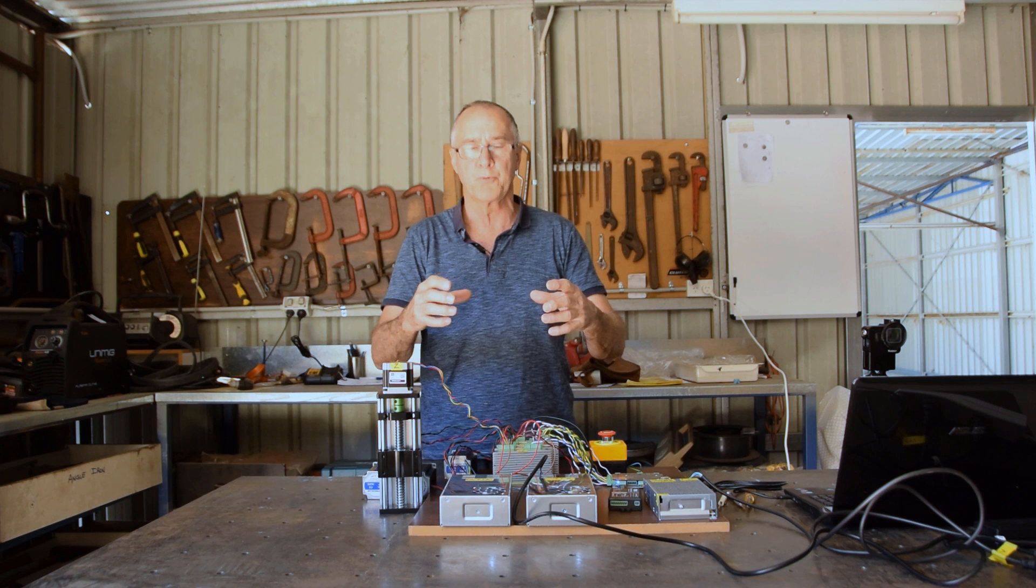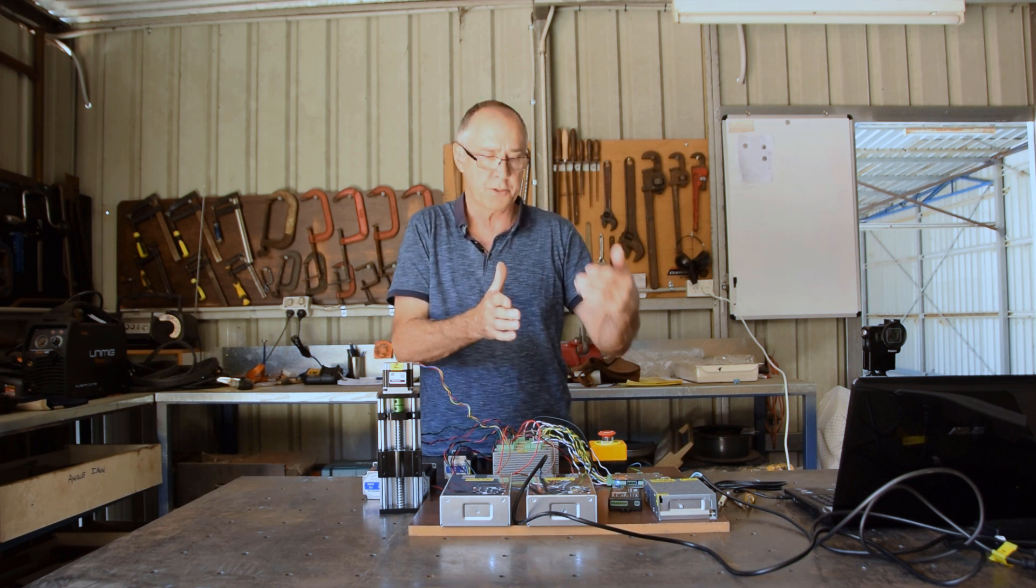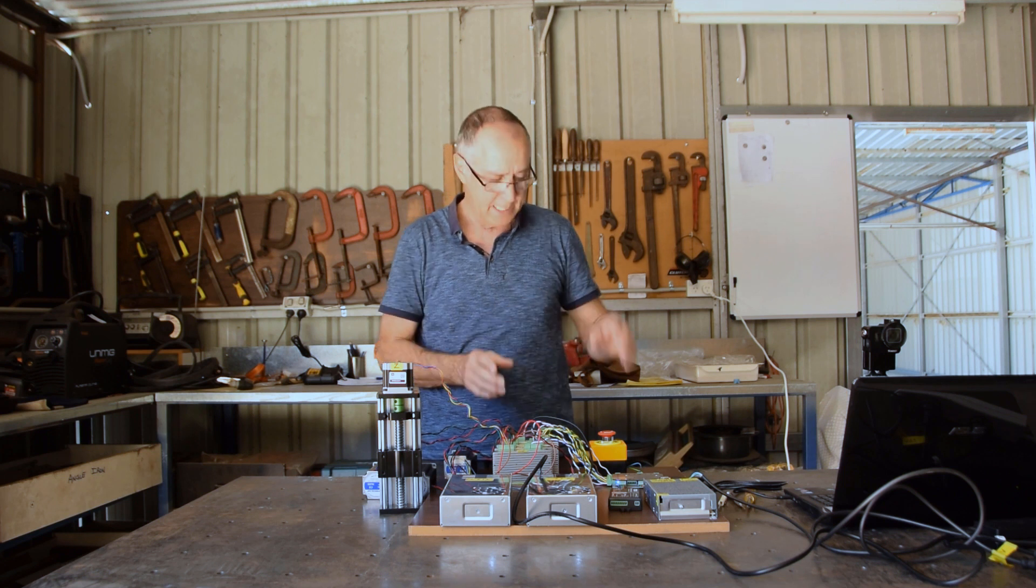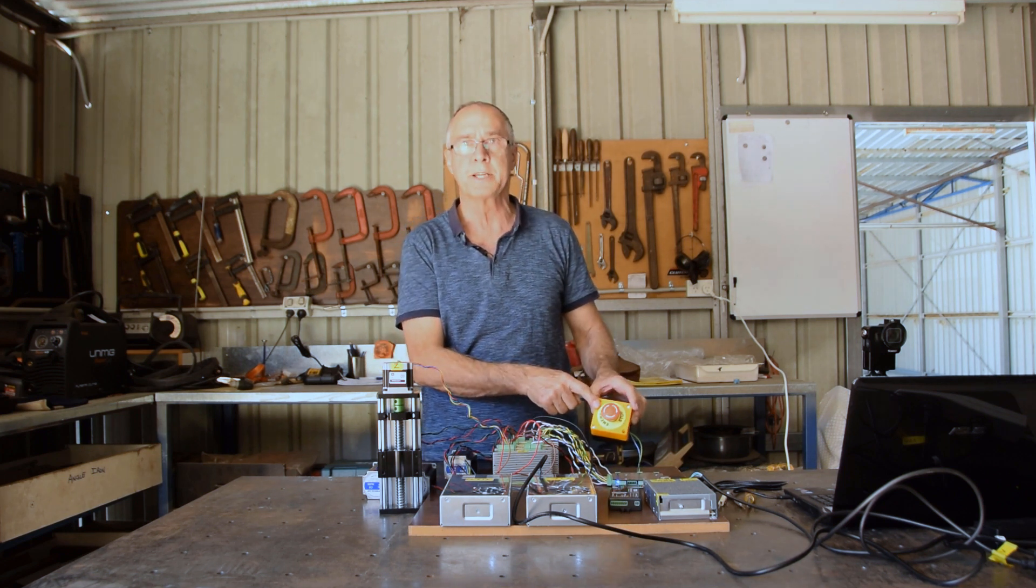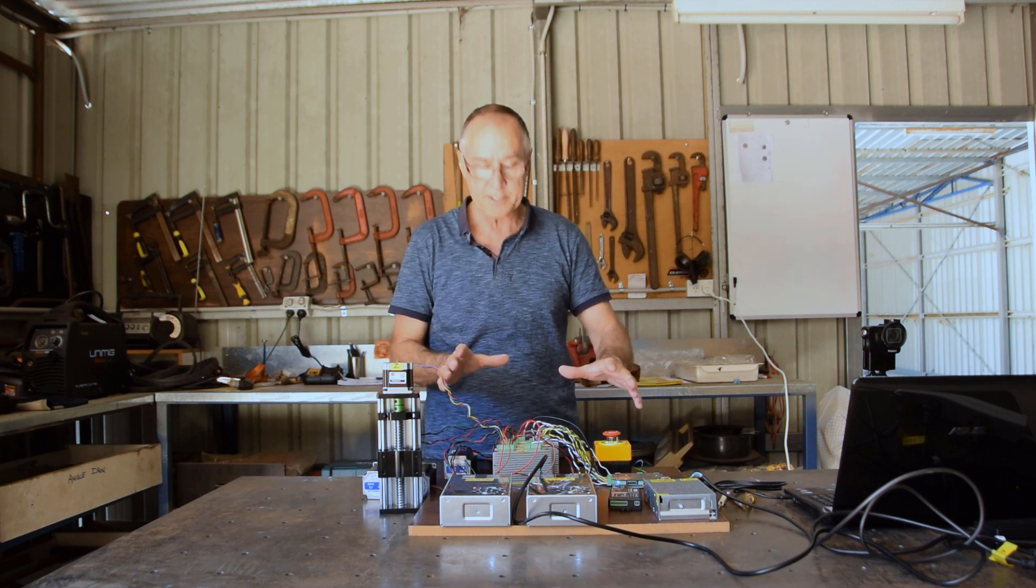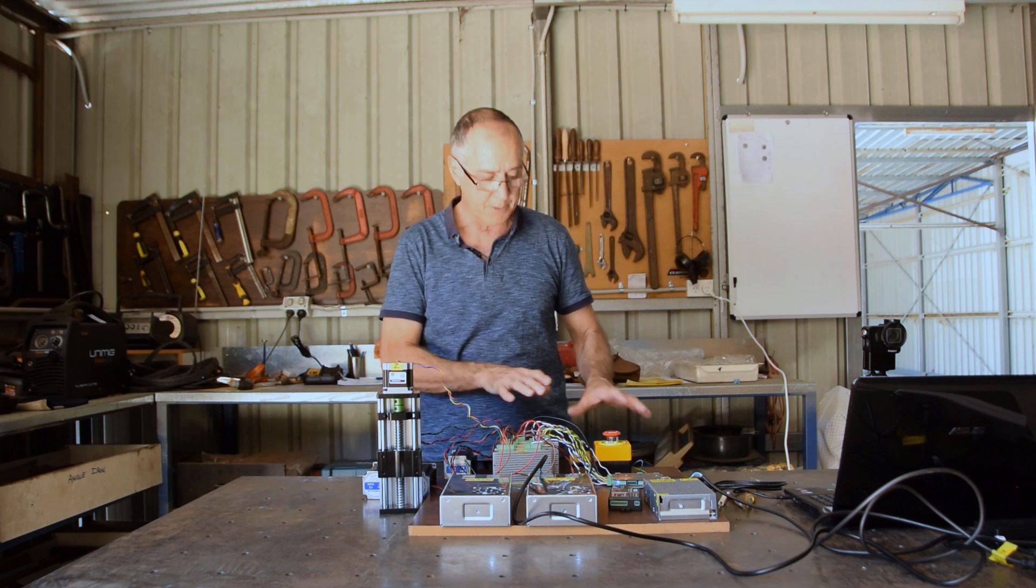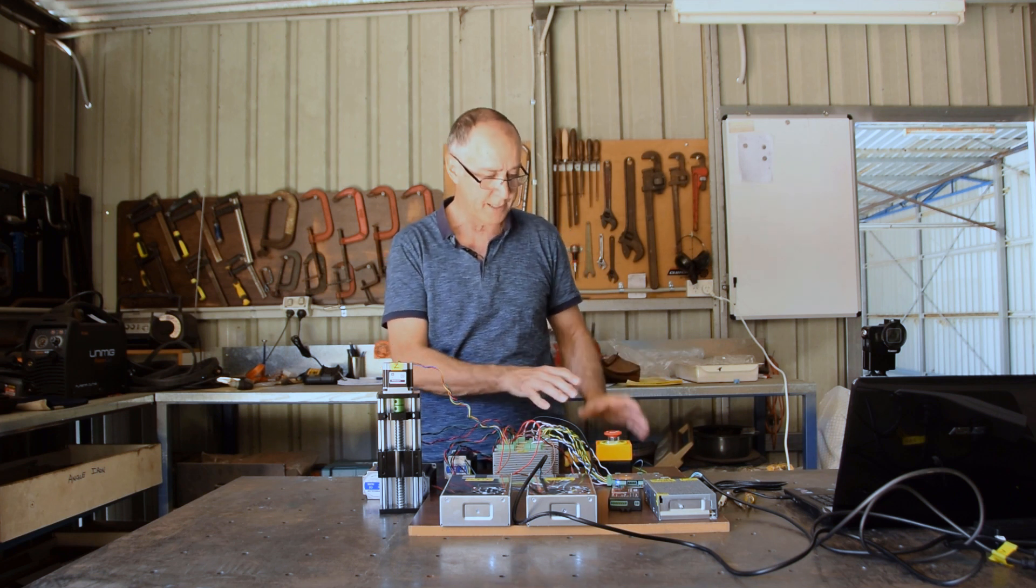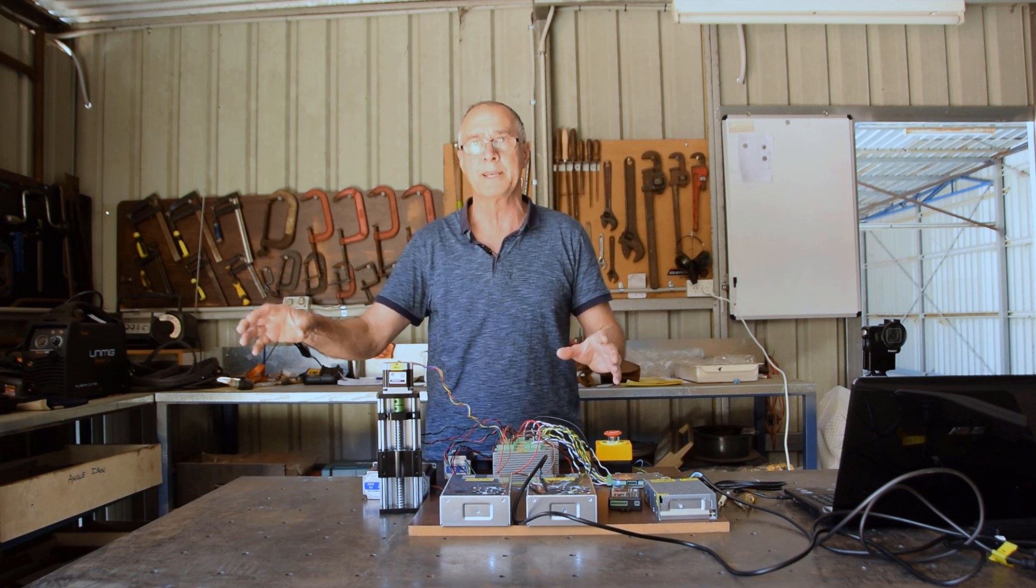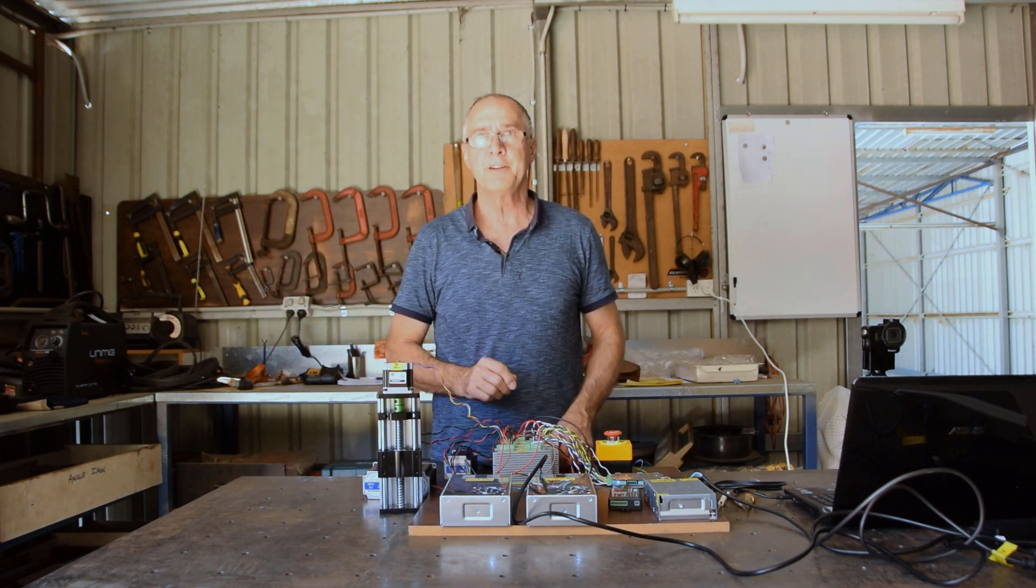The other thing that's important is an emergency stop button. Even on the bench test like this, if you want to run it and something happens and it goes a bit haywire, you need to be able to stop this in a hurry. In real life there'll be a stop button on the control board and there'll be a stop button out on the plasma table itself.